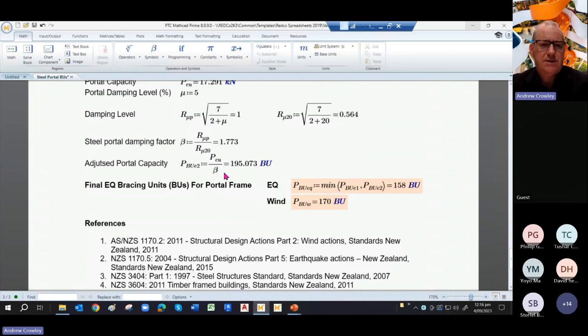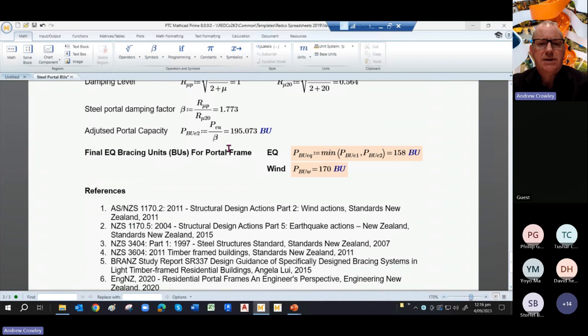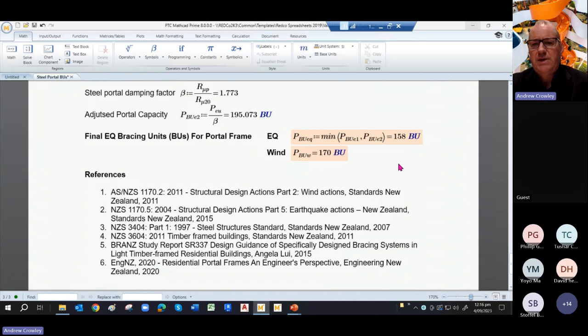And to put that in perspective, you end up with a steel portal damping factor of 1.73, which then adjusts our potential BUs to 195 BUs. However, that is bigger than we've already calculated, so you take the minimum. So the final EQ bracing units for the portal frame are 158 for seismic and 117 for wind. You'll notice it seems to be stronger for wind than it does for earthquake, which usually isn't a problem because it's usually the wind load that's dominating these light timber framed houses and similar buildings rather than earthquakes.